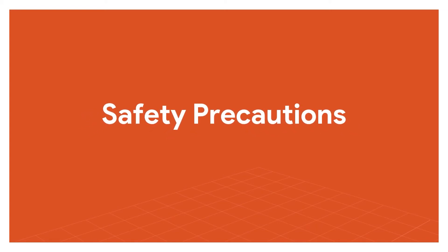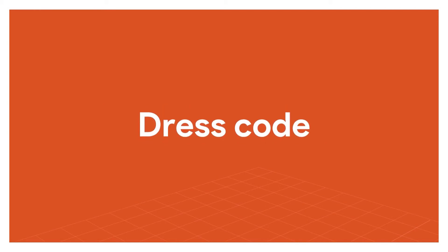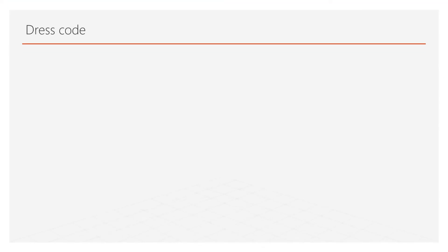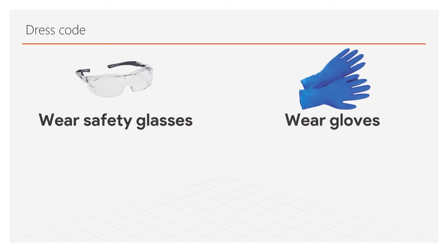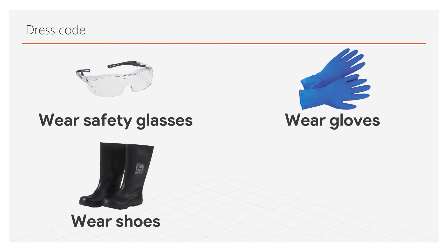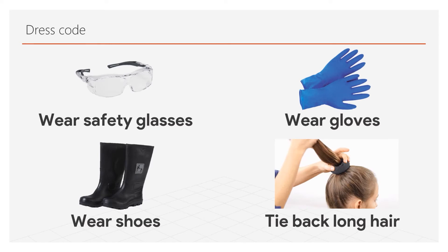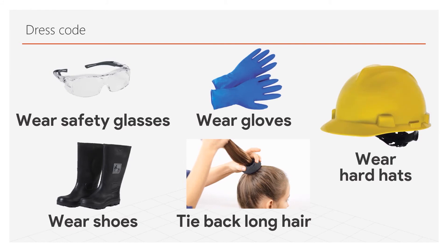Safety precautions: having a robust set of laboratory safety rules is essential in avoiding disasters in the lab. Laboratory dress codes set a clear policy for clothing. Some of the laboratory dress codes are: wear safety glasses or goggles; wear gloves when using any hazardous or toxic agent; shoes must be worn in the lab; girls with long hair must tie back their hair; and wear a lab coat before entering the lab.